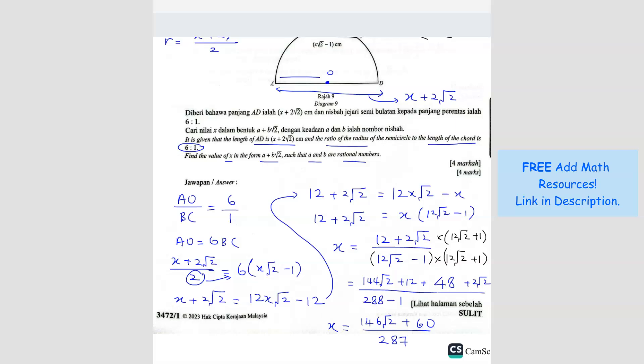But they ask you to leave in this format here, A plus B root 3 over 2. So what I can do is I can break the fraction up. So in the end you get your answer, x equals to 60 over 287 plus 146 over 287 root 3 over 2. I just break them apart, so you get this format. So this should be your answer. Can we simplify? I don't think so. So that's the answer. That's all.